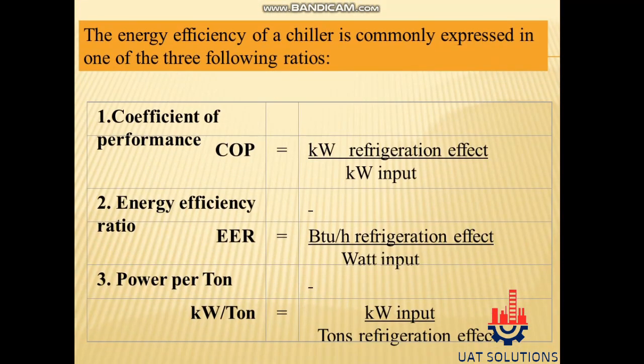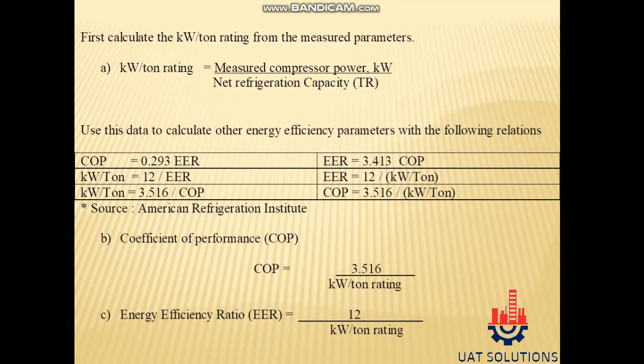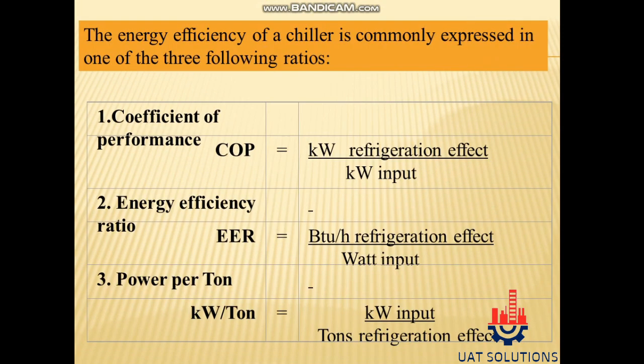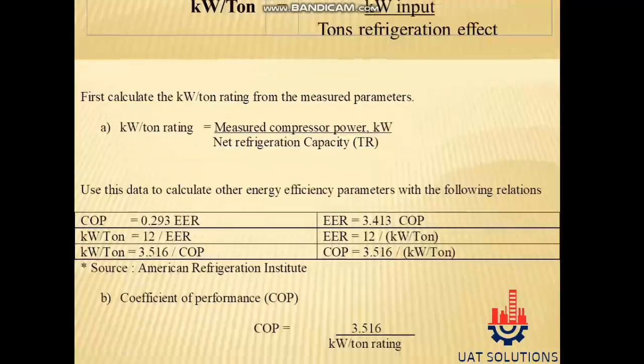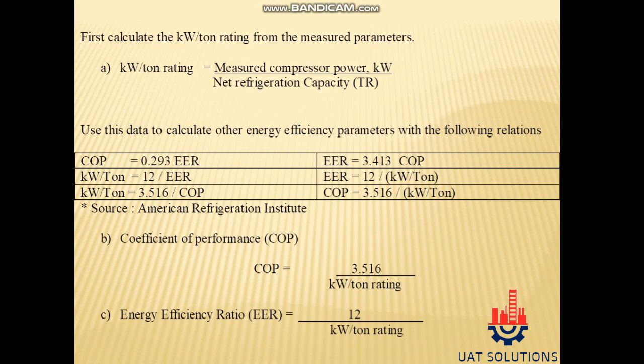The energy efficiency of a chiller is commonly expressed in one of the following three ratios: (1) Coefficient of performance (COP) equals kW of refrigeration effect divided by kW input. (2) Energy efficiency ratio (EER) equals BTU per hour refrigeration effect divided by watt input. (3) Power per ton (kW per ton) equals kW input divided by tons of refrigeration effect. First, calculate the kW/ton rating from the measured parameters: kW per ton rating equals measured compressor power in kW divided by net refrigeration capacity in TR.